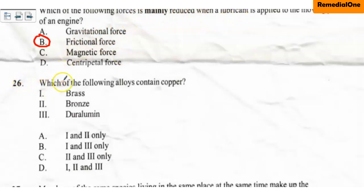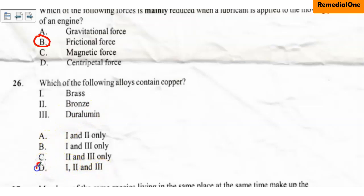Question number 26: Which of the following alloys contain copper? I. Brass, II. Bronze, III. Duralumin. The correct option is I, II, and III — all of them contain the element copper. Duralumin, bronze, and brass all contain the element copper. So the correct answer here is option D.